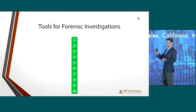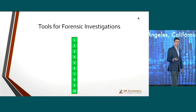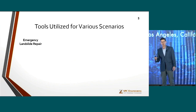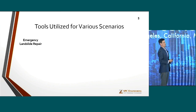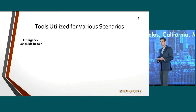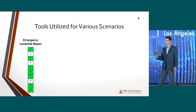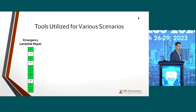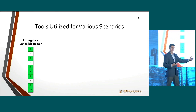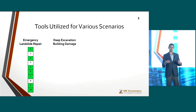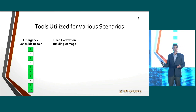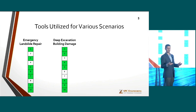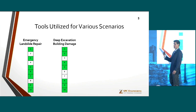If we take our forensic tools and say we have 10 tools available, I'm going to go through a few examples and scenarios. For an emergency landslide repair, we're not going to use all 10 — say we use seven, including topographic surveying, inclinometers for instrumentation and monitoring, and collecting topographic data from before the landslide. Here's another example: potential building damage due to a deep excavation adjacent to a building. Again, we're not using all 10, but we're going to use different types of tools than we would for the landslide repair.